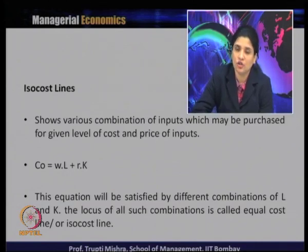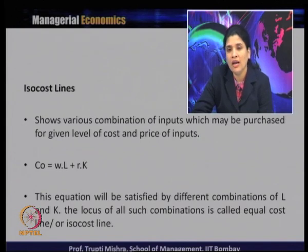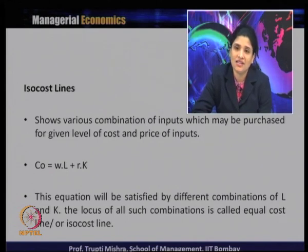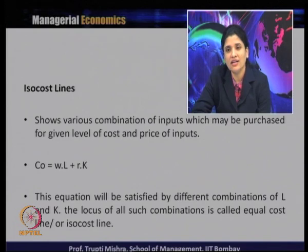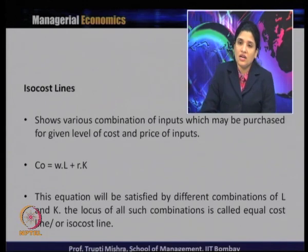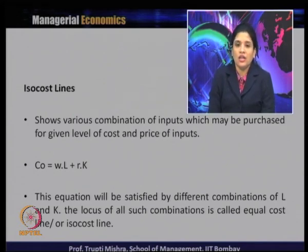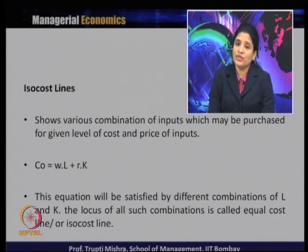The iso cost line takes the form: C₀ = WL + RK, where L is labour and K is capital. W is the cost of labour — typically wages and salary — and R is the interest rate paid for using capital. C₀ represents the total cost associated with the inputs. The equation is satisfied by different combinations of labour and capital, and the locus of such combinations is called the equal cost line or iso cost line.